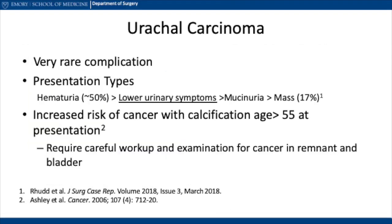A very rare condition with a poor prognosis that must always be considered with urachal remnants is urachal carcinoma. The most common presentation in approximately 50% of cases is hematuria, followed by lower urinary tract symptoms, mucinuria, and least commonly, a mass. The risk of urachal carcinoma is higher in patients who present over the age of 55 and have a calcification. These patients require a careful workup and examination for cancer in both the remnant as well as in the bladder.